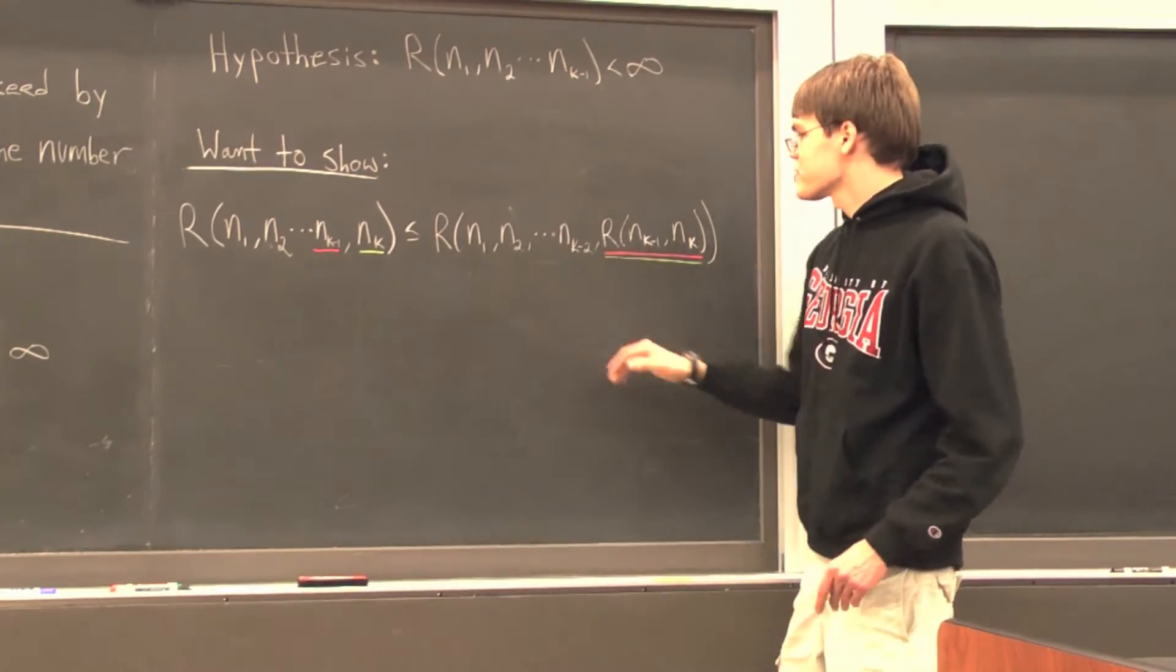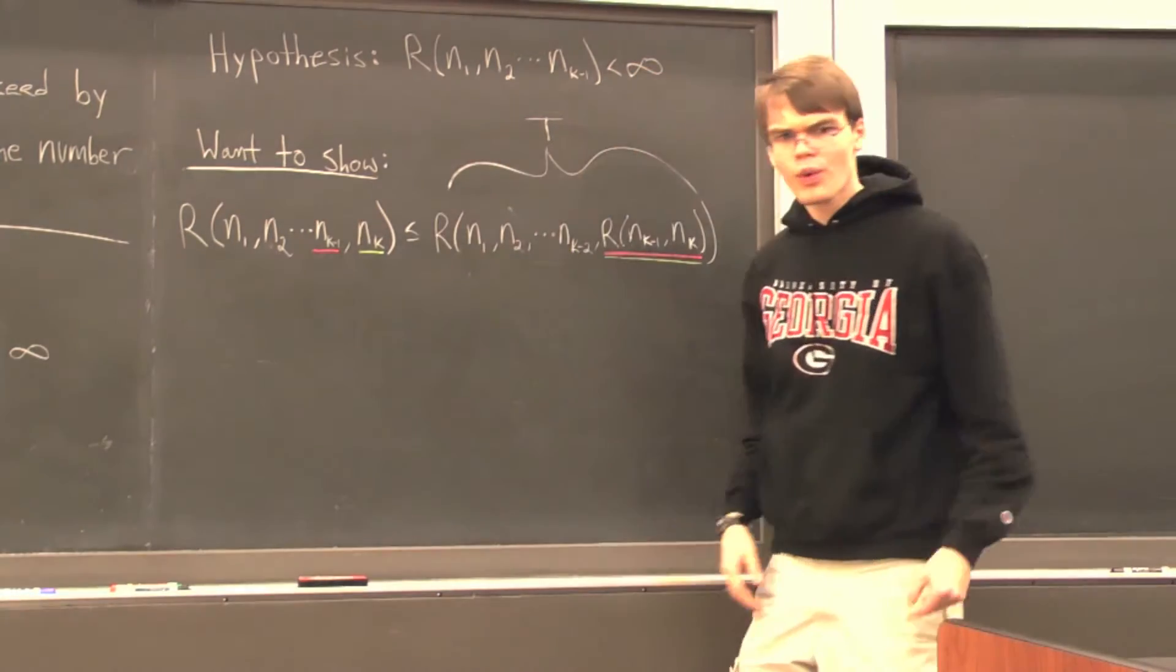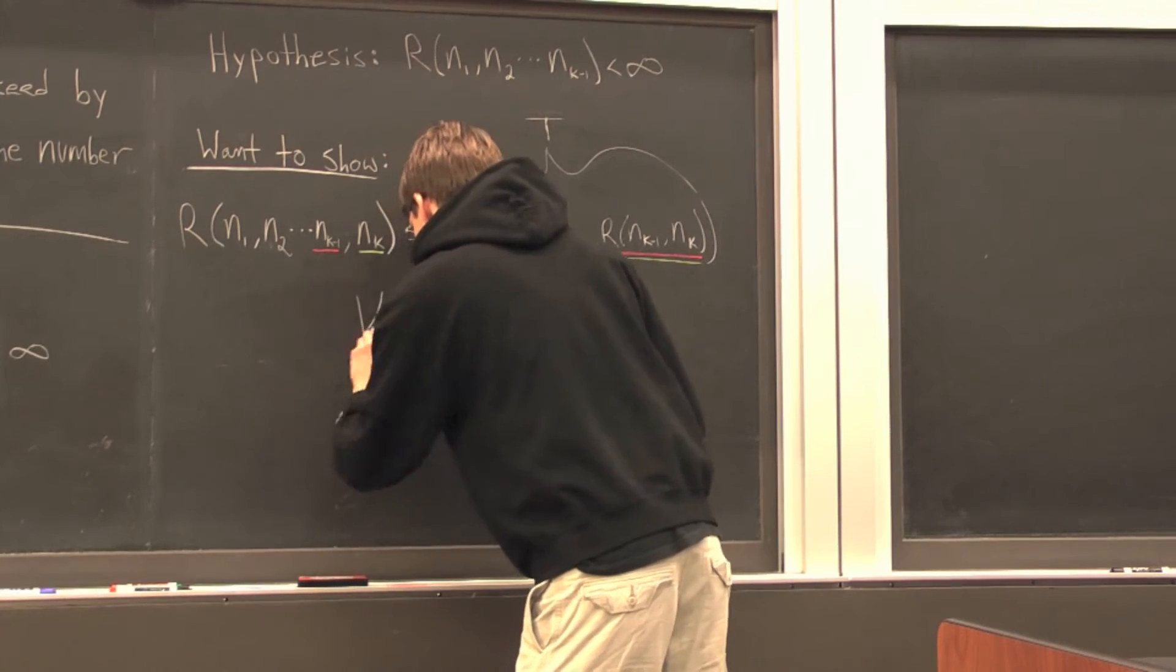Well, we know that our right side is finite, so let's assign it a value, say, t. What I want to do is consider the complete graph on t vertices. So we're going to consider Kₜ.